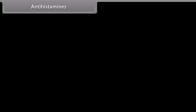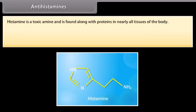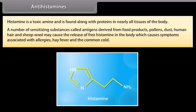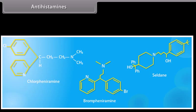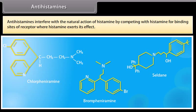Antihistamines: histamine is a toxic amine found along with proteins in nearly all tissues of the body. Sensitizing substances called antigens derived from food products, pollens, dust, human hair, and sheep wool may cause the release of free histamine in the body, which causes symptoms associated with allergies, hay fever, and the common cold. An antihistamine relieves these symptoms by blocking the action of histamine. For example, chlorpheniramine, brompheniramine, and celdane. Antihistamines compete with histamine for binding sites on the receptor where histamine exerts its effect.